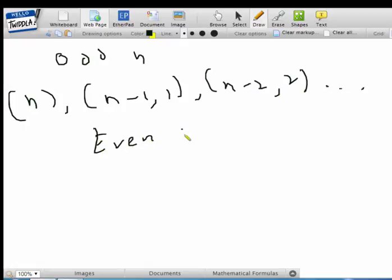And for even, we have n, 1, n minus 1, 2, n minus 2, 3, and so on.